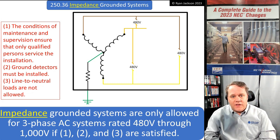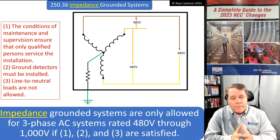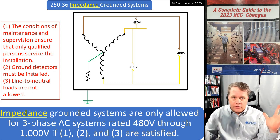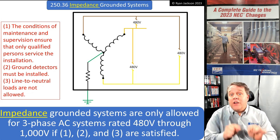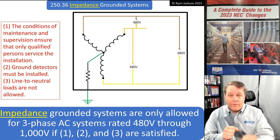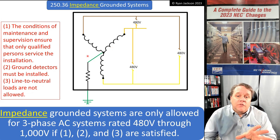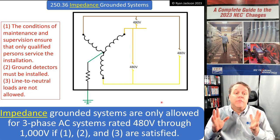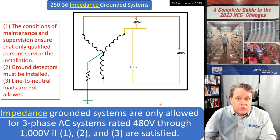Finally, in the 2023 code, a very close friend of mine named Eric Stromberg - Eric and I have worked together for decades - got onto the Code Making Panel. Eric knows impedance grounding. If I have a question on grounding impedances, I'm calling Eric. Eric got on the code making panel and made it his mission for the 2023 code to fix 250.36, and they did, and I'm thrilled with what they did.